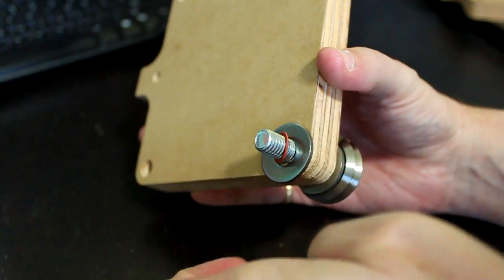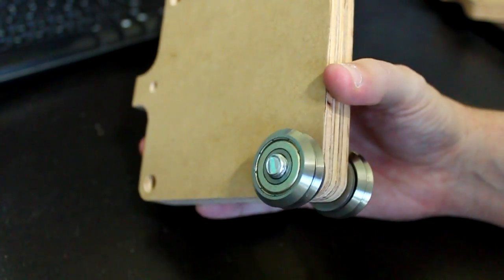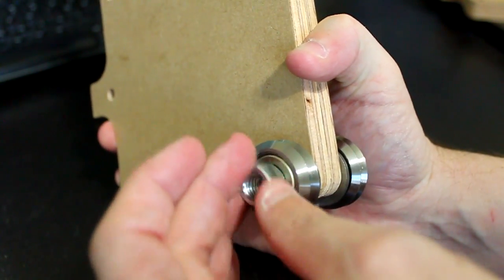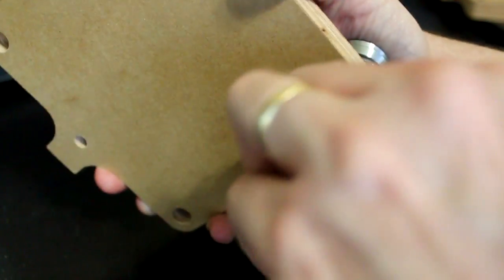The bearings on the back of this piece will be used to ride along the Y axis rail assembly. The bearings on the front will serve as guides for the Z axis rail assembly.